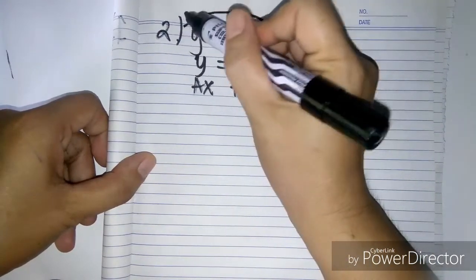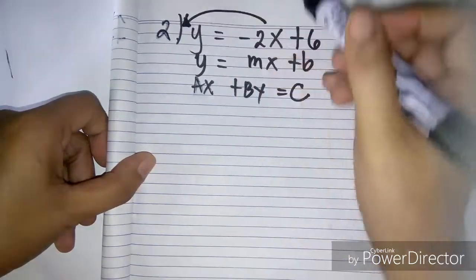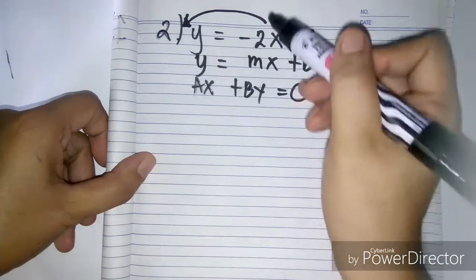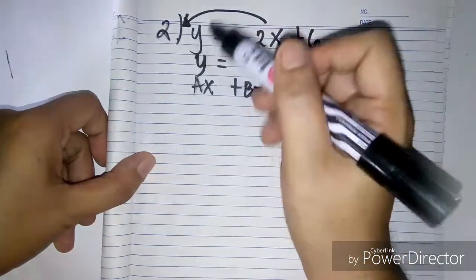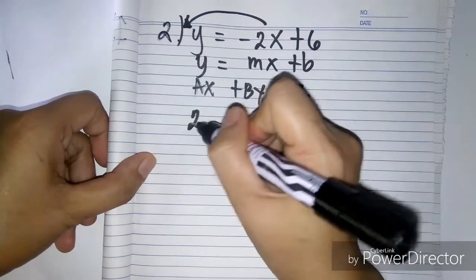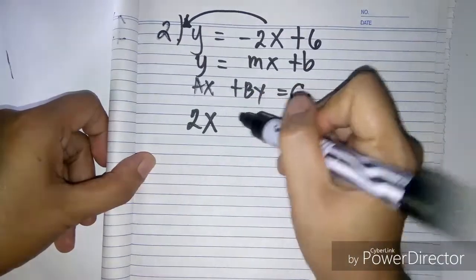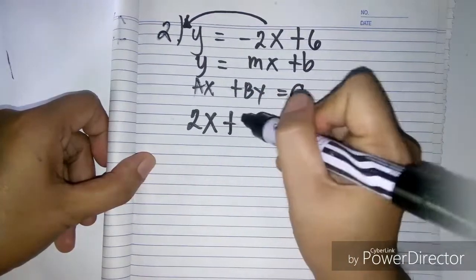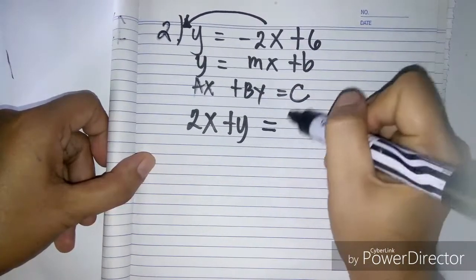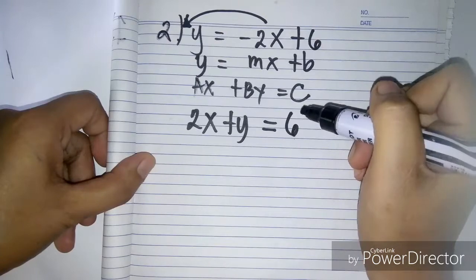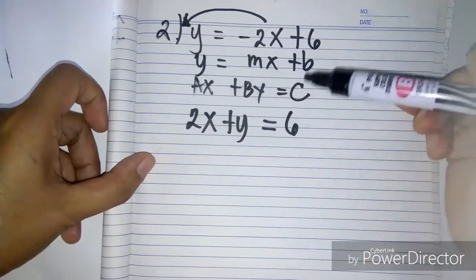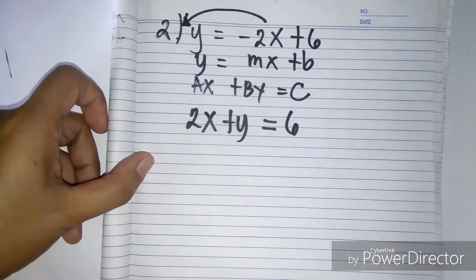you transpose negative 2x to the other side. The negative sign will change to positive. So therefore you have positive 2x plus y equals 6. And now it is in the form of ax, by, and c.